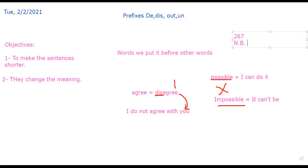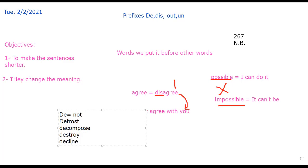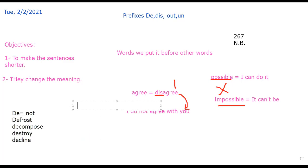Let's revise together the prefixes we took before. We have: d, dis, out, and un. 'D' here means 'not' — for example, 'defrost' means I don't want the food to be frozen, 'decompose,' 'destroy,' 'decline' which means to go down. Also 'dis' is another prefix that means 'not' — like 'disagree' and 'disable.' Remember, when I add the prefix it has to be connected to the same word — no space between them.